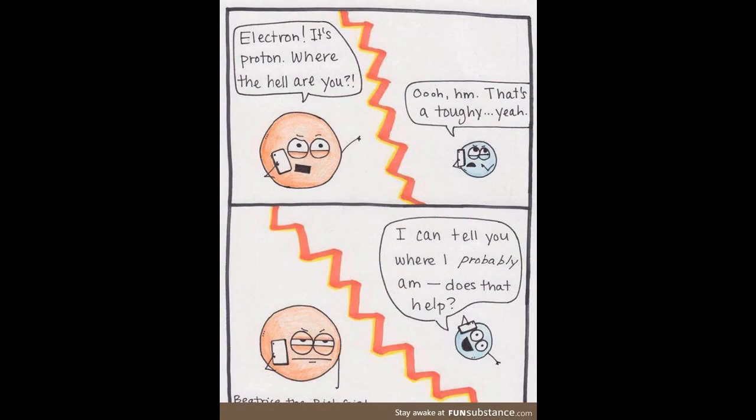This state of superposition is how and why a single particle is able to produce an interference pattern, that is, until a measurement is taken. It is the act of measuring or observing that causes the collapse of the wave function, and forces our particle to start behaving like itself and choose only one outcome.